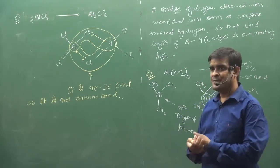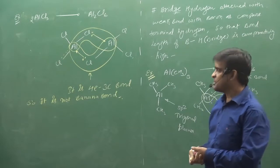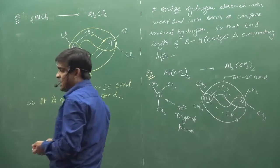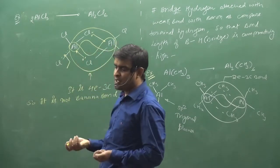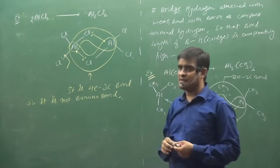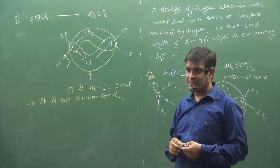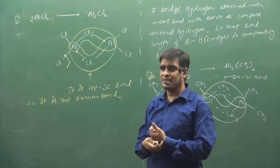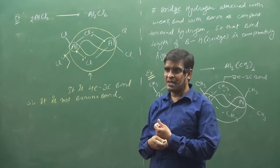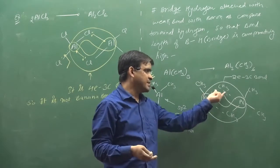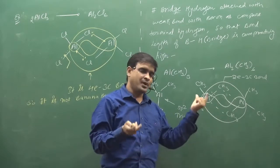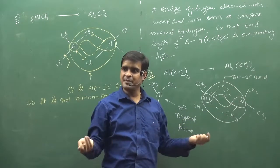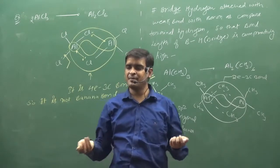So back bonding is not effective. Dimer - many compounds form dimers, but here the dimer - what is the coordinate bond? If it has a lone pair, it needs to take it - coordinate bond. How did the lone pair happen? No lone pair. So this will be proper banana bonding. Dimers and polymers are made.